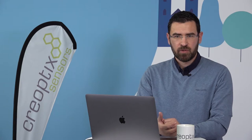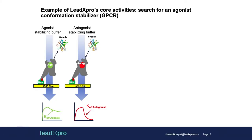I would like to show an example of what we are really doing at Lidex Pro. Here it's a project where we wanted to search for an agonist conformation stabilizer — that's a GPCR project. In that case, we want to crystallize the GPCR in the agonist conformation. For that, we raised nanobodies, and the question was: how do we screen for them? We came up with a setup where we could screen the nanobodies against two different conformations of the same GPCR. One screen was performed on the agonist-stabilized receptor, and one set of experiments was done on the antagonist-stabilized GPCR.